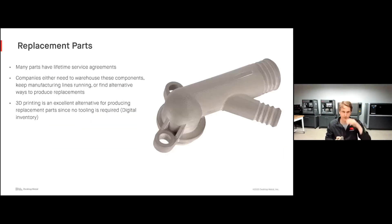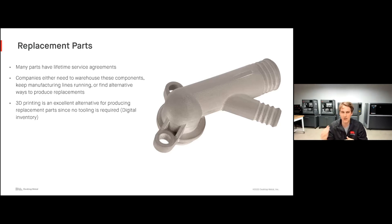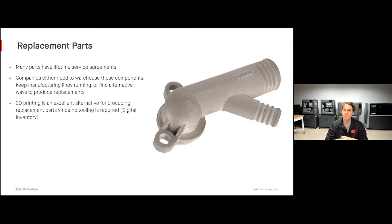Another great example is replacement parts. Many parts today have lifetime service agreements where you're guaranteeing customers replacement parts for the entire life that machine or geometry is in service. Companies either need to warehouse these components or keep manufacturing lines running. 3D printing is an excellent alternative because now we're able to do what's called a digital warehouse — a digital inventory. Rather than storing hard goods and tooling, all I have to do is pull a file, throw it on the printer, and in a couple of days I'm ready to send it out to the customer.